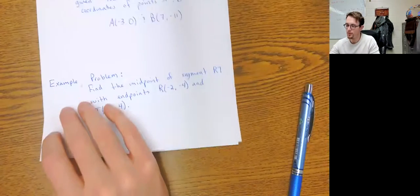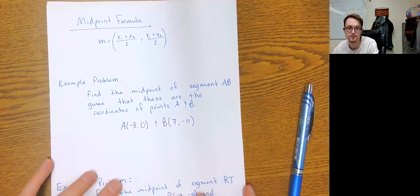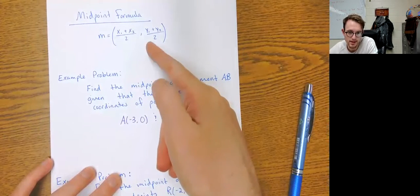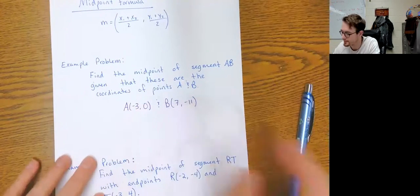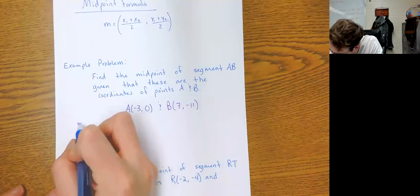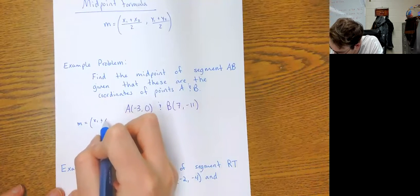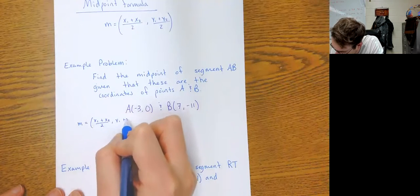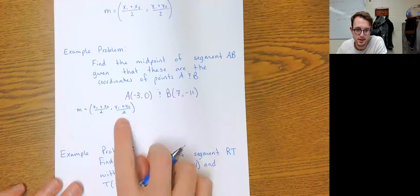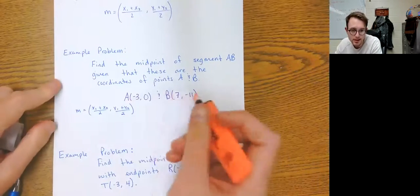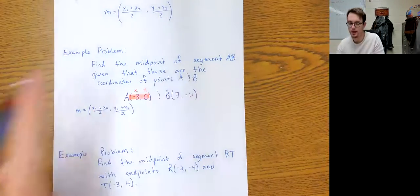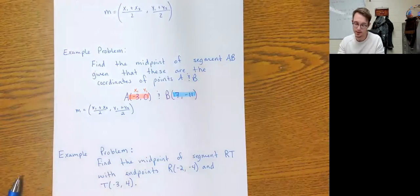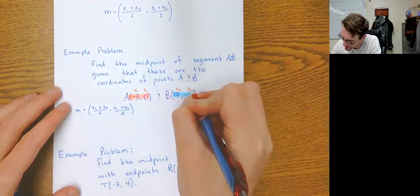Now let's move on to when you're given midpoint questions in the form of a sentence. Still the same formula, but instead of being given a graph where you can visually see the endpoints, you're just given the coordinates. I still like to start out with the general form: M equals x sub one plus x sub two, all divided by two, comma, y sub one plus y sub two, all divided by two. Just pick a coordinate and make that coordinate your x1, y1, and then the other coordinate your x sub 2, y sub 2.